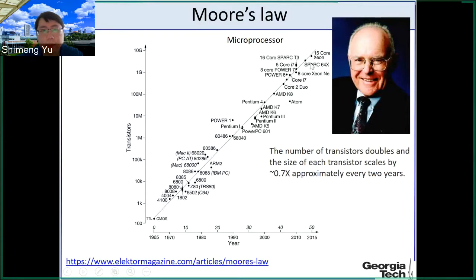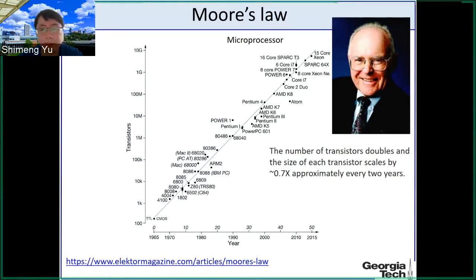Today transistor counts reach more than a billion on chip. Moore's Law is still alive until today, but the industry is facing difficulties maintaining it in coming years. Intel delayed their 7nm processor by a year. We do see challenges in scaling and a slowdown of Moore's Law, but the historical trend is still valid.